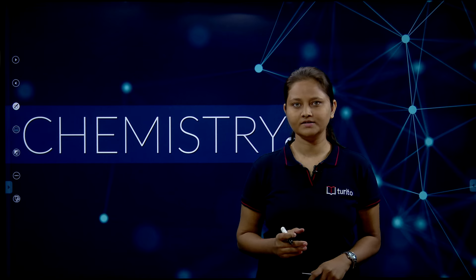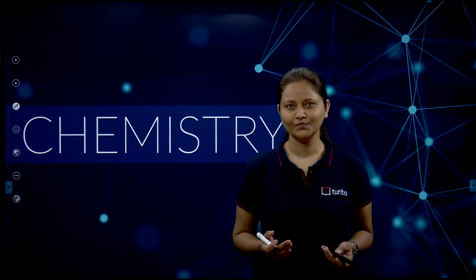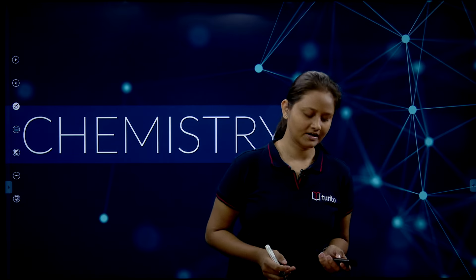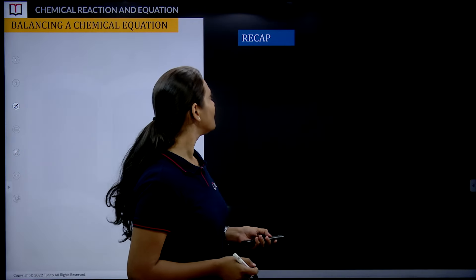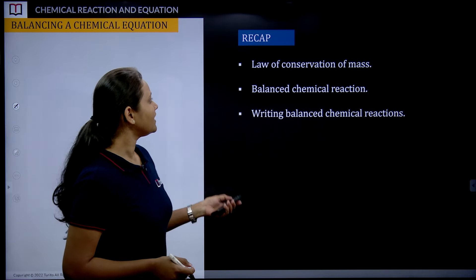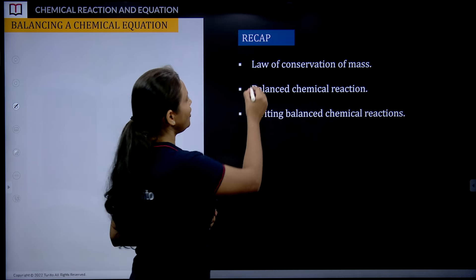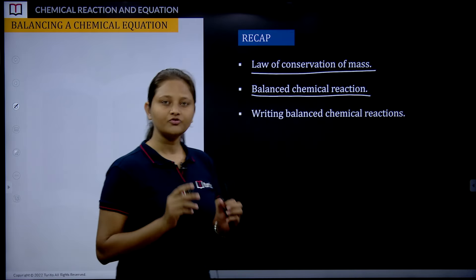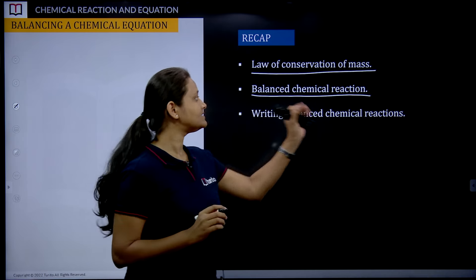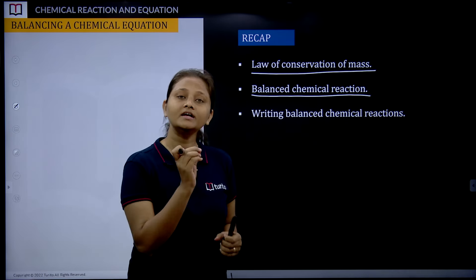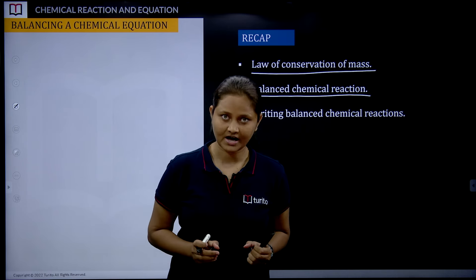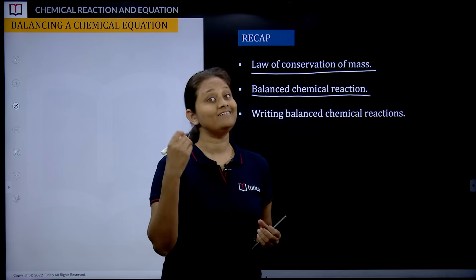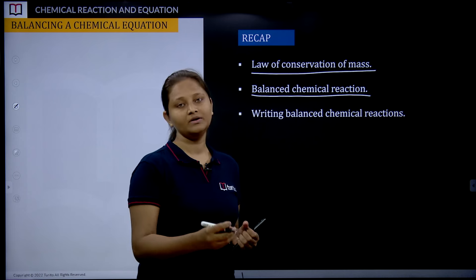Are you all able to recall, or is this very new? If you are getting confused, let's recall what we studied in the last class. First was the law of conservation of mass, then we learned about balancing chemical reactions. That class was dedicated to balancing, and we took 10 examples of different chemical reactions using the hit-and-trial method.